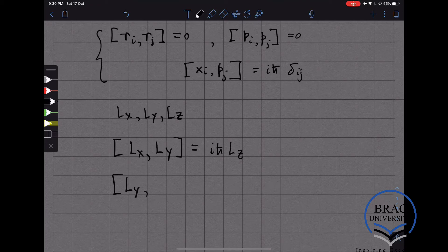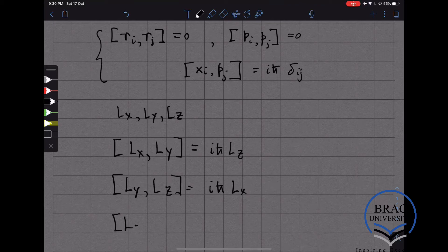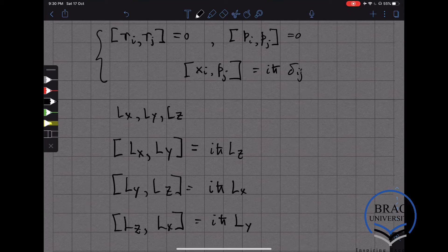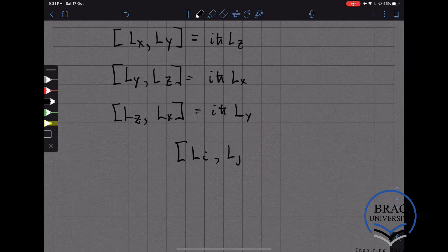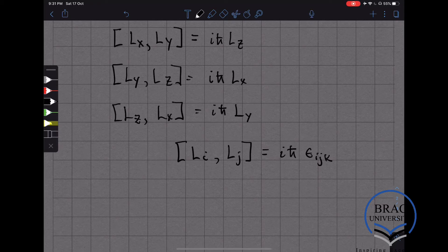The commutator of Ly and Lz gives i h bar Lx, and the commutator of Lz and Lx gives i h bar Ly. And these three relationships can be succinctly written as the commutator of Li and Lj equals i h bar epsilon_ijk Lk.